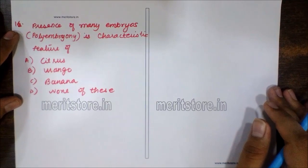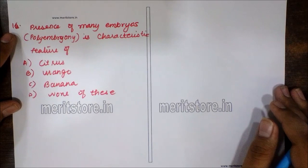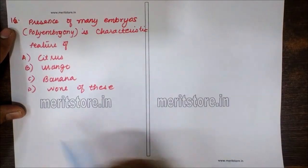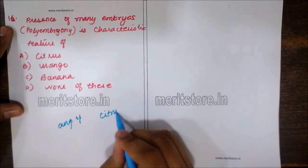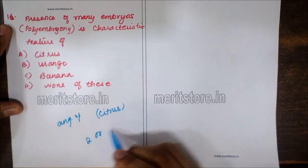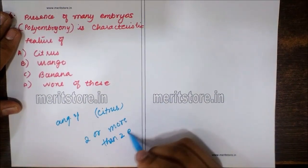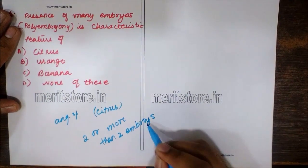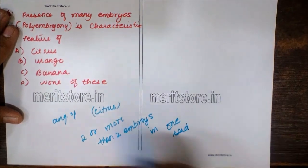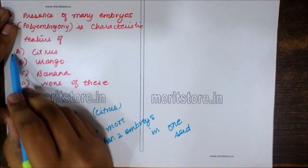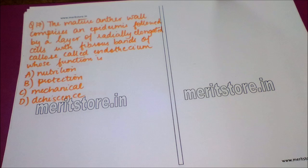Question 16: presence of many embryos — polyembryony — is a characteristic feature of which plant? Option A: citrus. Option B: mango. Option C: banana. Option D: none of these. In angiosperms, citrus can have two or more embryos in one seed, which is called polyembryony. Option A is the correct answer.